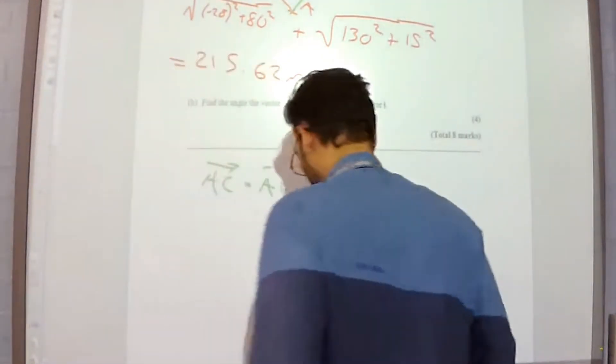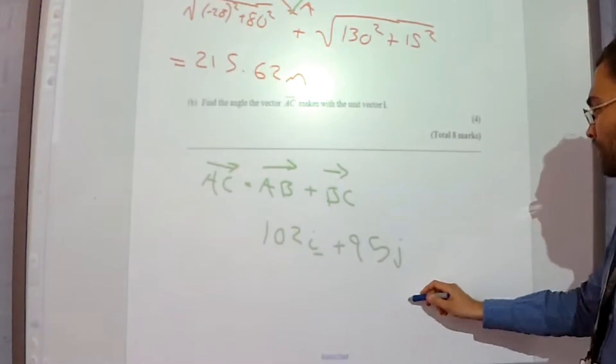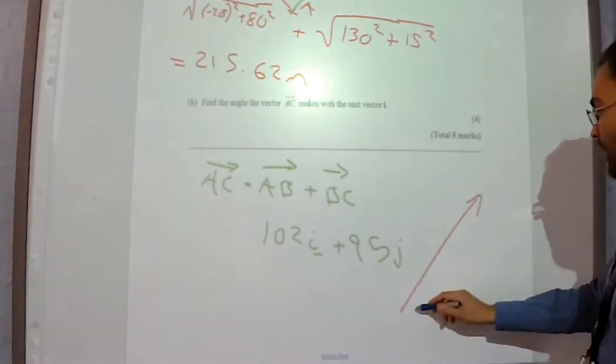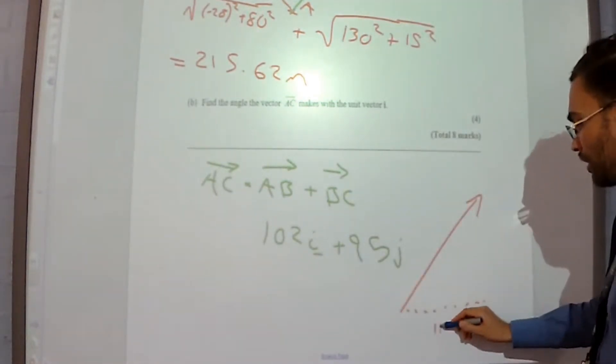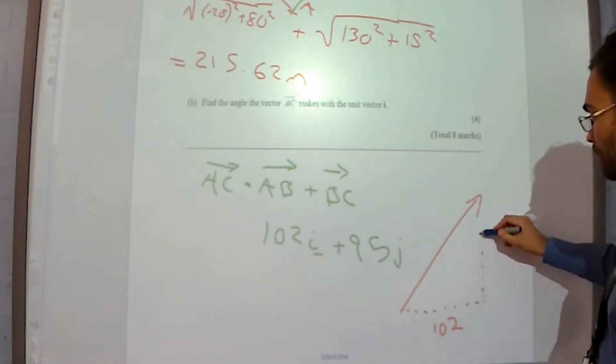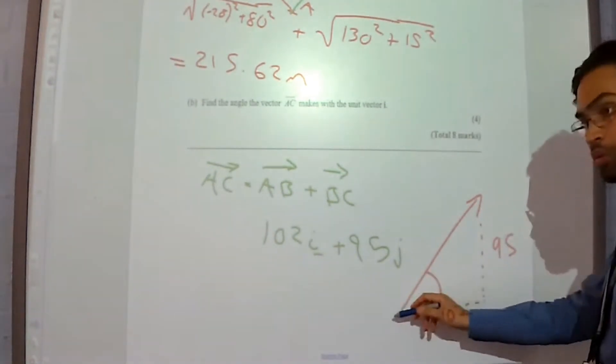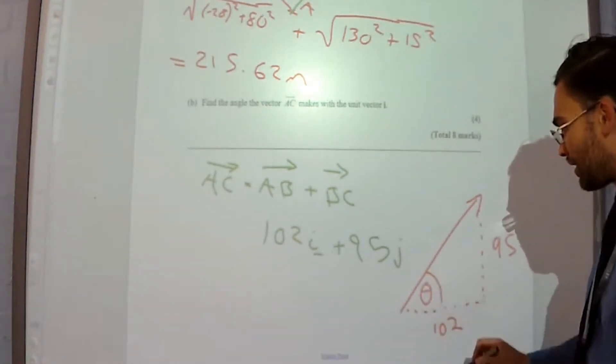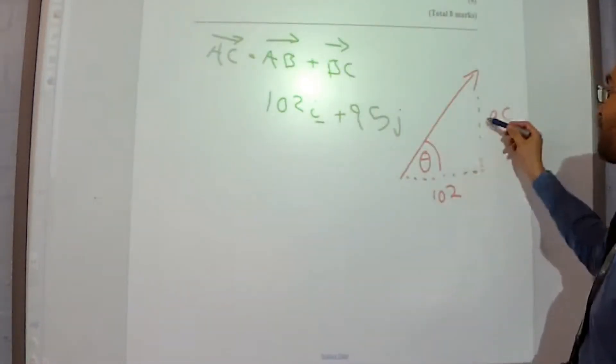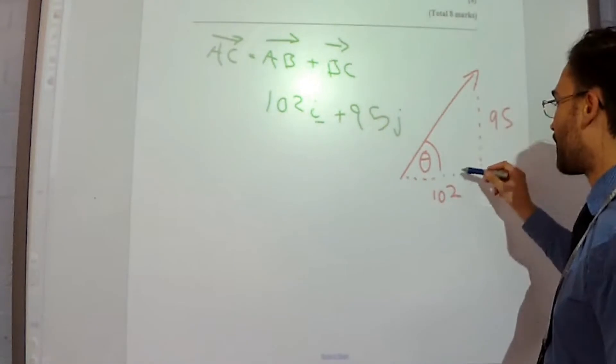So if I was sketching that, 102 across and 95 up. The angle it makes with the horizontal, this angle theta, well that's a right angle triangle. I've got the opposite and I've got the adjacent.